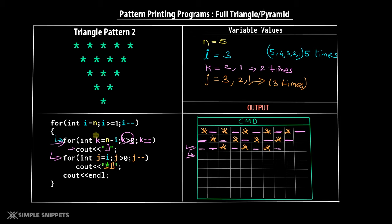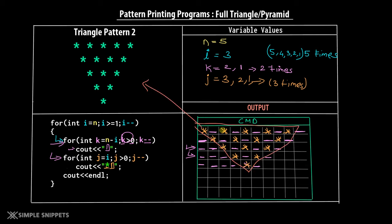The last two iterations are left for you to dry run. In the fourth iteration, 3 blank spaces are printed and then the pattern prints 2 symbols. In the last iteration, 4 blank spaces are printed and the pattern prints once. You can see the final output forms our inverted triangle: 5 stars, 4 stars, 3, 2, 1 — that is triangle pattern two.